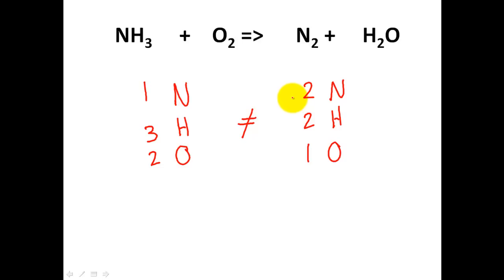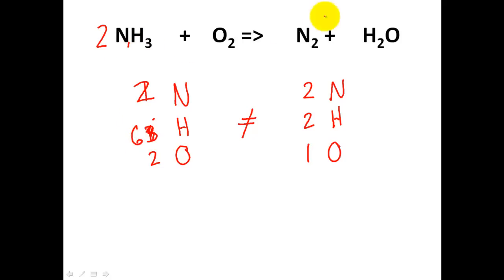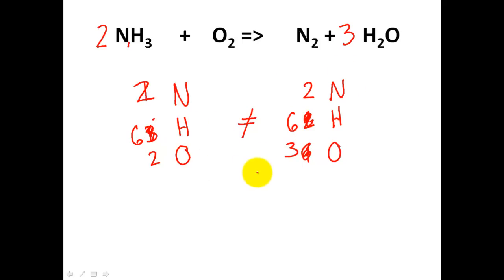Let's begin with nitrogen. There are two nitrogens on the product side and one on the reactant side. I'll do two times one to give me two nitrogens. That changes the coefficient to two, and two times three is six H's — so I no longer have three H's, I have six. Let's work with H's now: three times two gives me six H's on the product side. The H's are now balanced, and three times one is three oxygens. But the oxygens are still not balanced: three versus two.